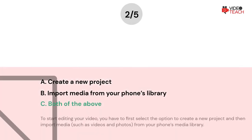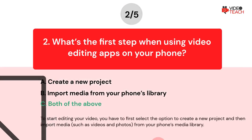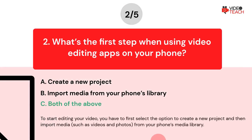The correct answer is Option C. To start editing your video, you have to first select the option to create a new project, and then import media such as videos and photos from your phone's media library.